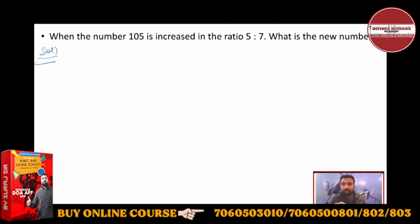Let's focus on this question now. When the number is increased in the ratio of 5 to 7, so there are two numbers.